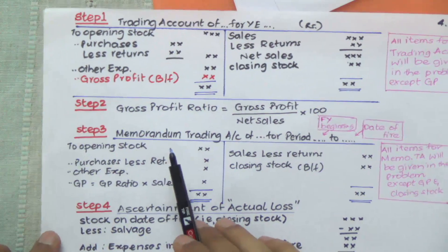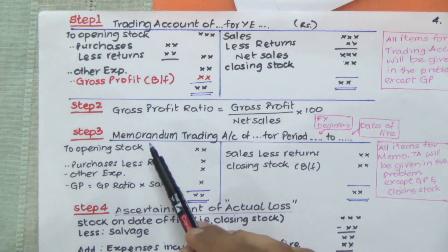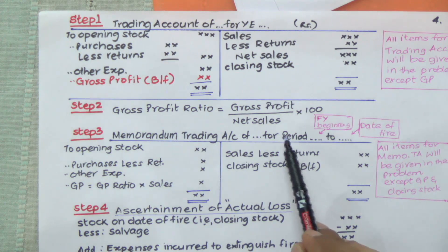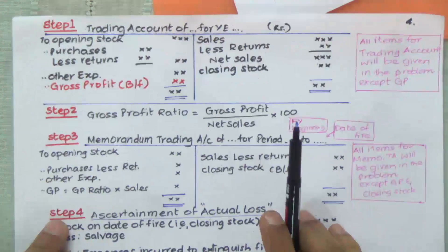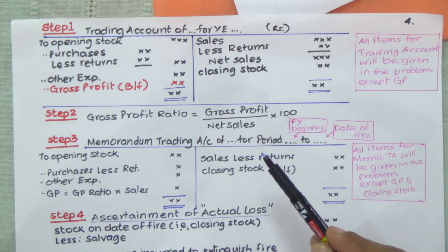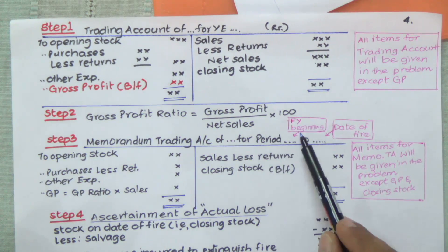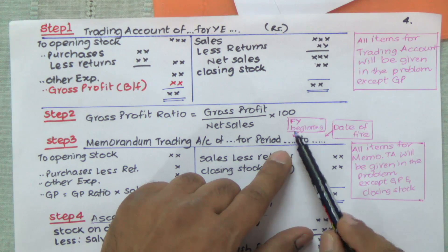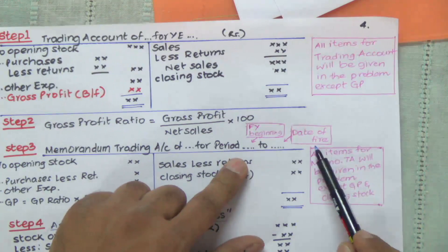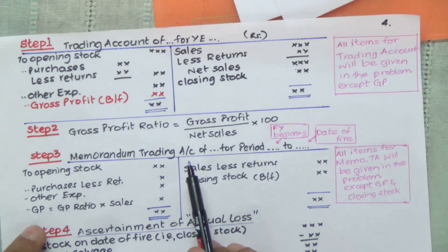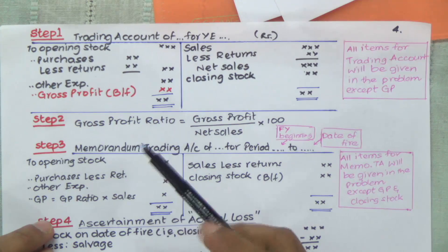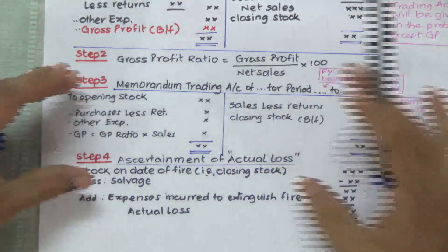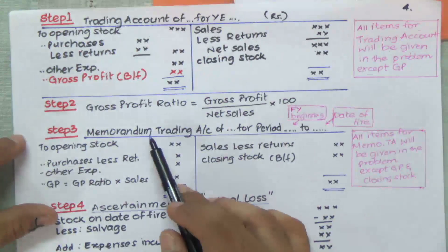Step three is the memorandum trading account. We use the word 'memorandum' because it is for a particular period — it is not for a full year. The trading account was for a year ending, but the memorandum trading account is for a period starting from the beginning of the financial year and ending on the date of the fire. It is not prepared for the regular period of the financial year — that's why we use the word 'memorandum.' Except for that, all the rules and the format are exactly the same as the trading account.